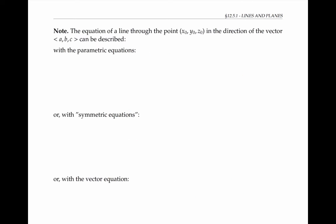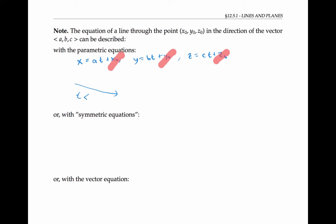More generally, if we want to describe a line through a point x-naught, y-naught, z-naught in the direction of the vector A, B, C, we can describe it with the parametric equations: x equals At plus x-naught, y equals Bt plus y-naught, and z equals Ct plus z-naught. Remember, if x-naught, y-naught, z-naught weren't there, our equations would just describe a point at the tip of a vector t times our original vector. But by adding x-naught, y-naught, and z-naught, we've shifted that line over so it goes through the point x-naught, y-naught, z-naught.